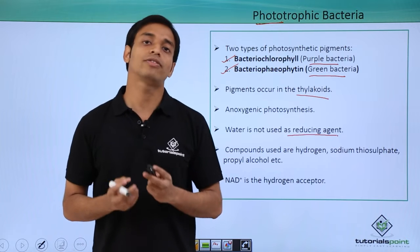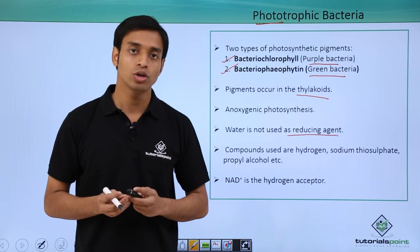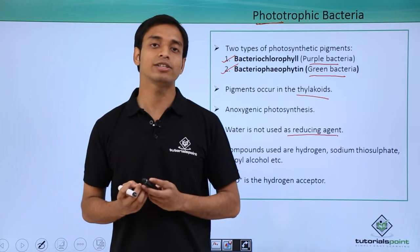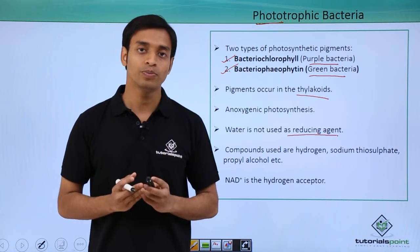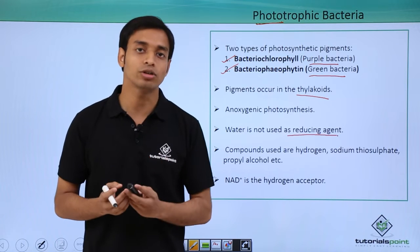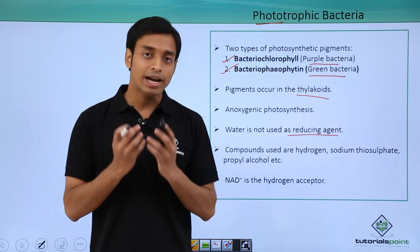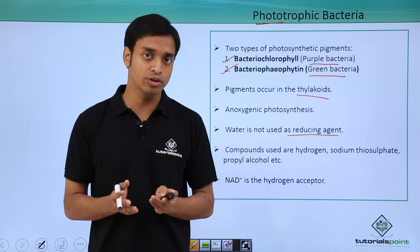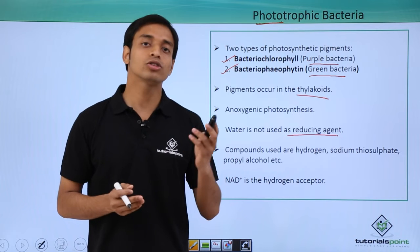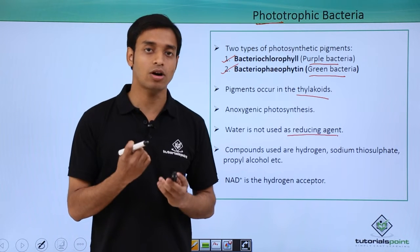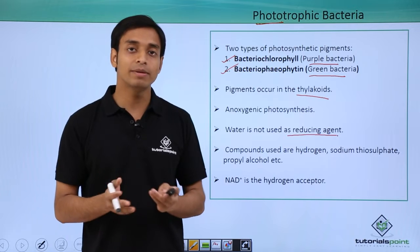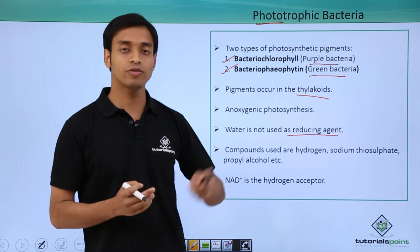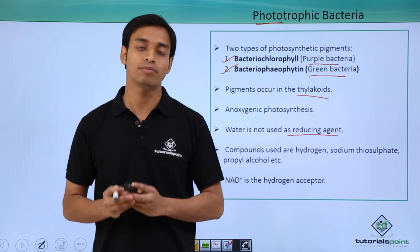These bacteria are mostly found at the bottom areas of big lakes and ponds, because the oxygen concentration at the bottom of lakes or ponds is very low. At these areas, the sulfur content and other compounds are found in high amounts. So because of poor oxygen concentration and the presence of high amounts of sulfur compounds, phototrophic bacteria are found at the bottoms of lakes and ponds.